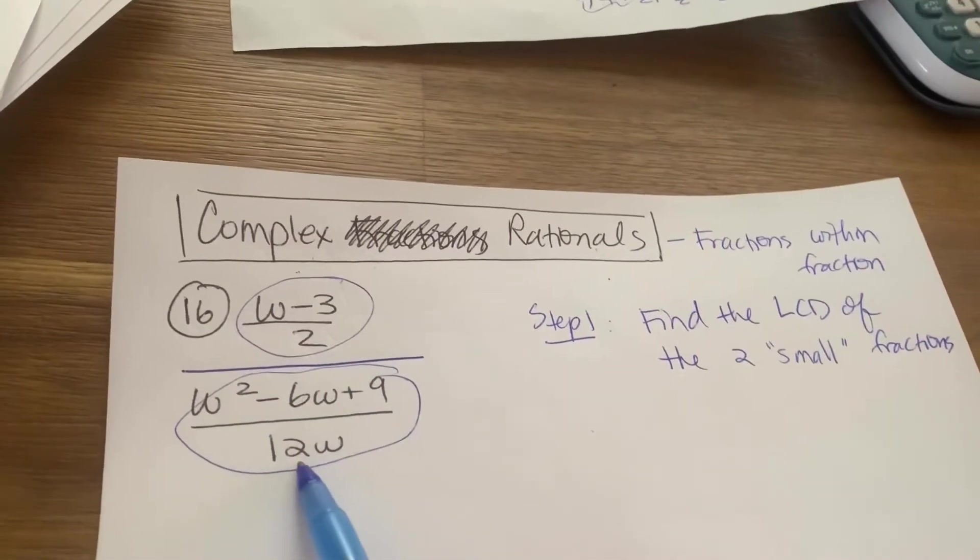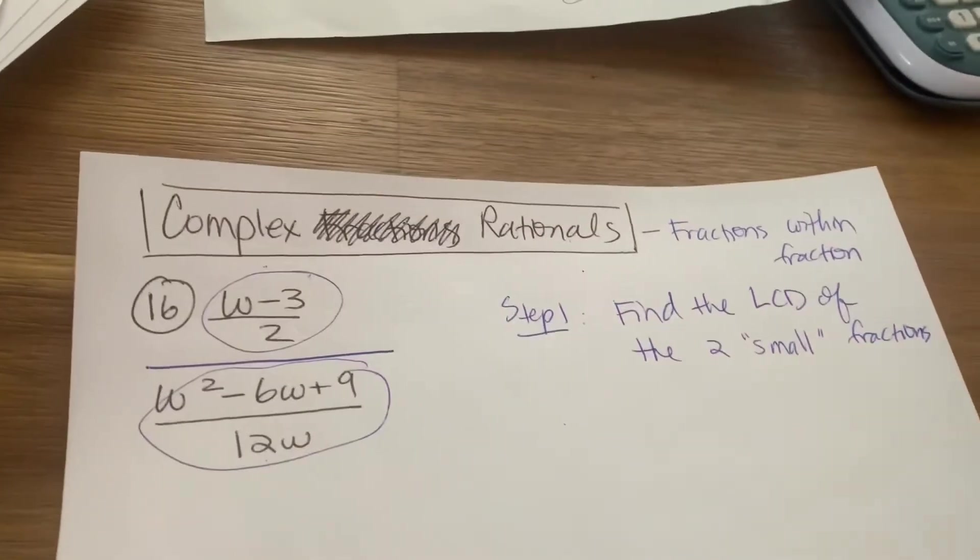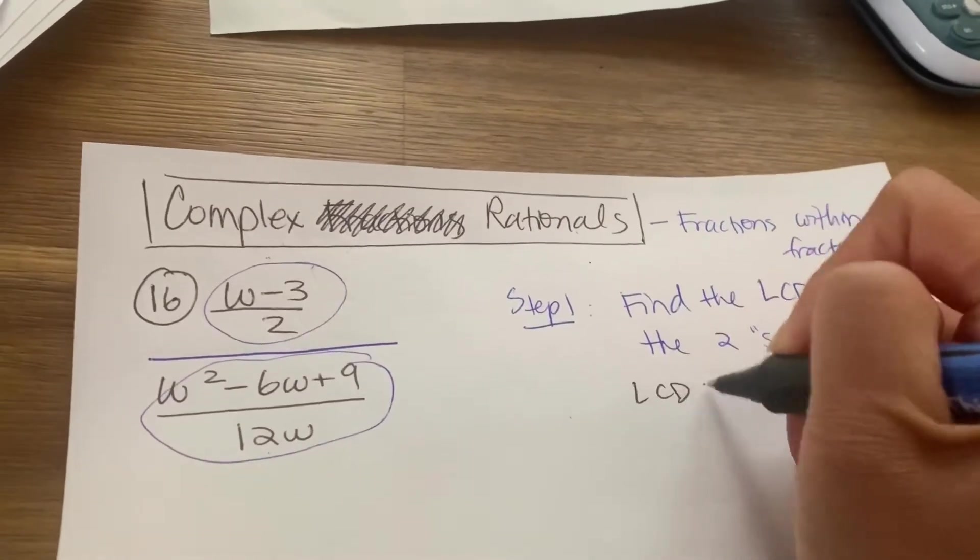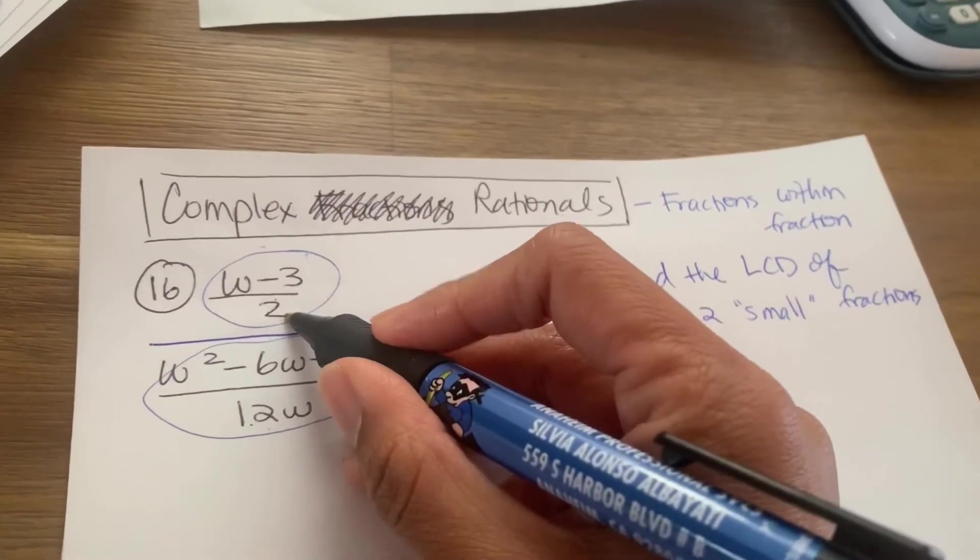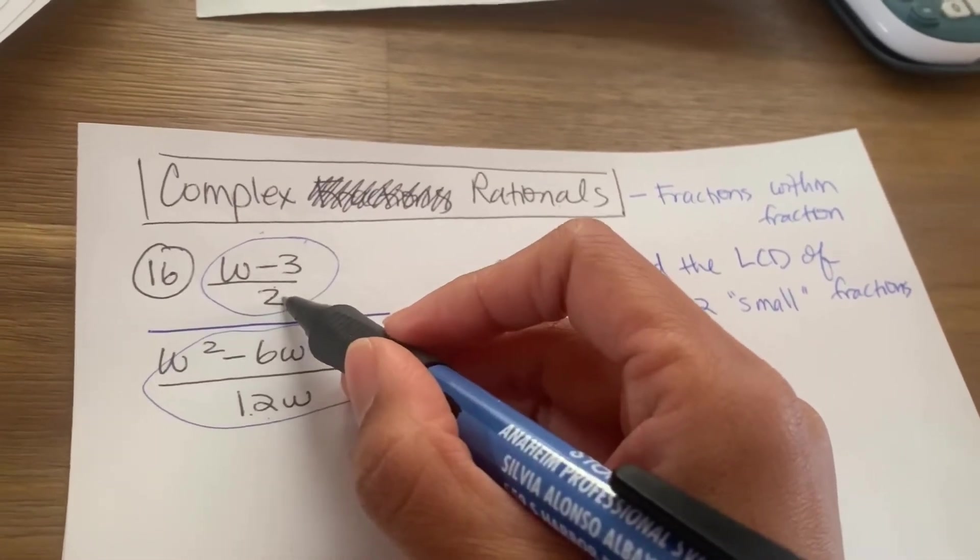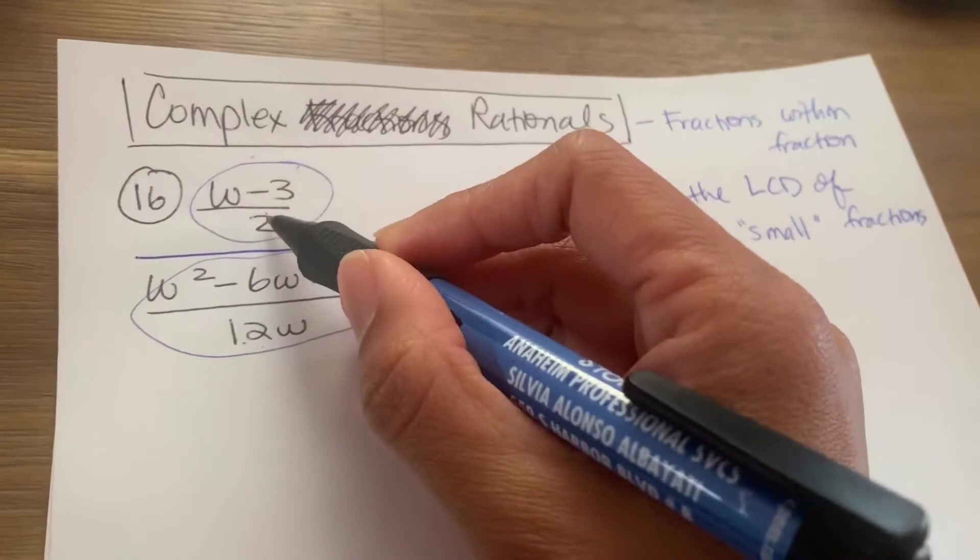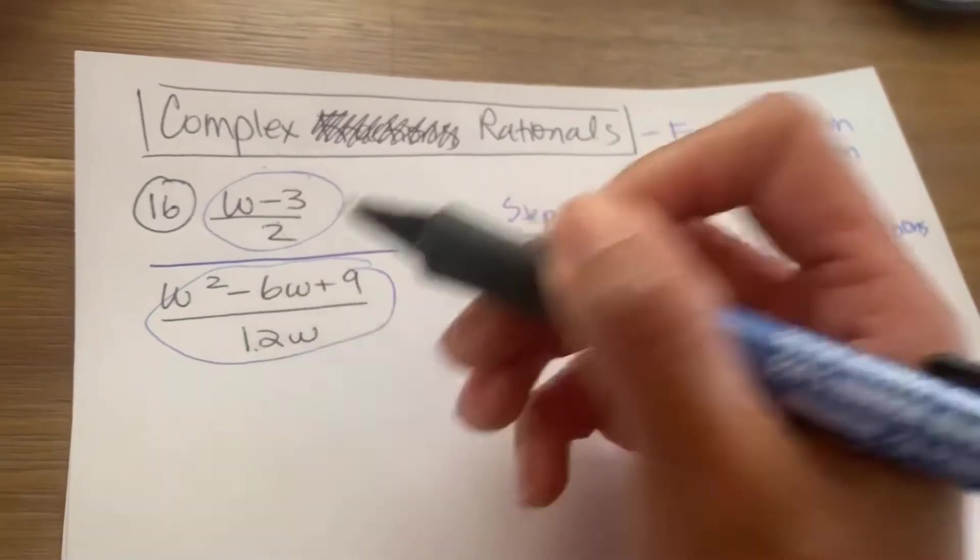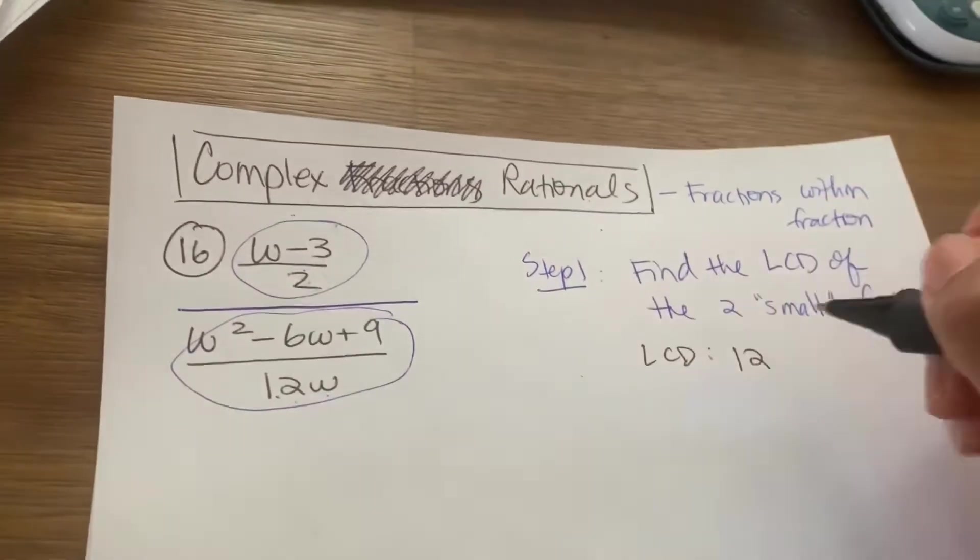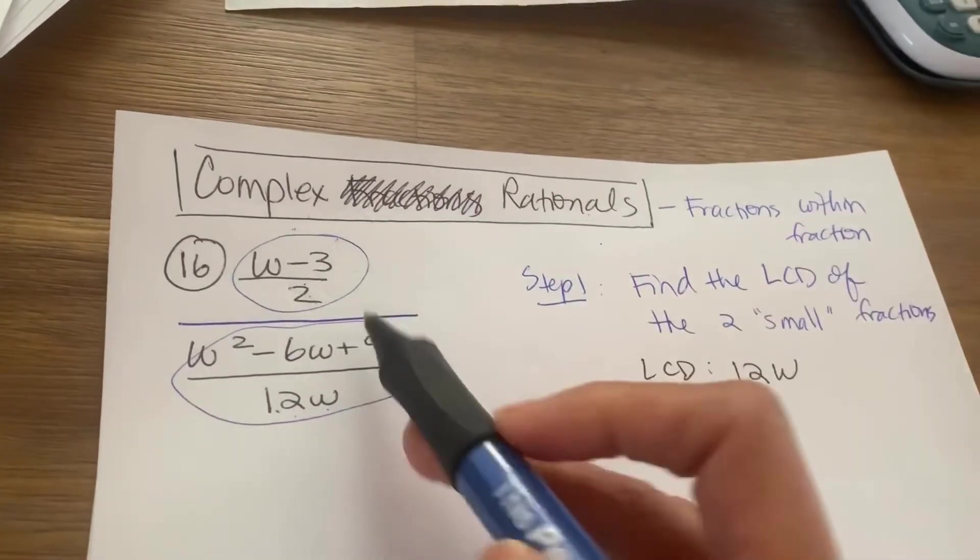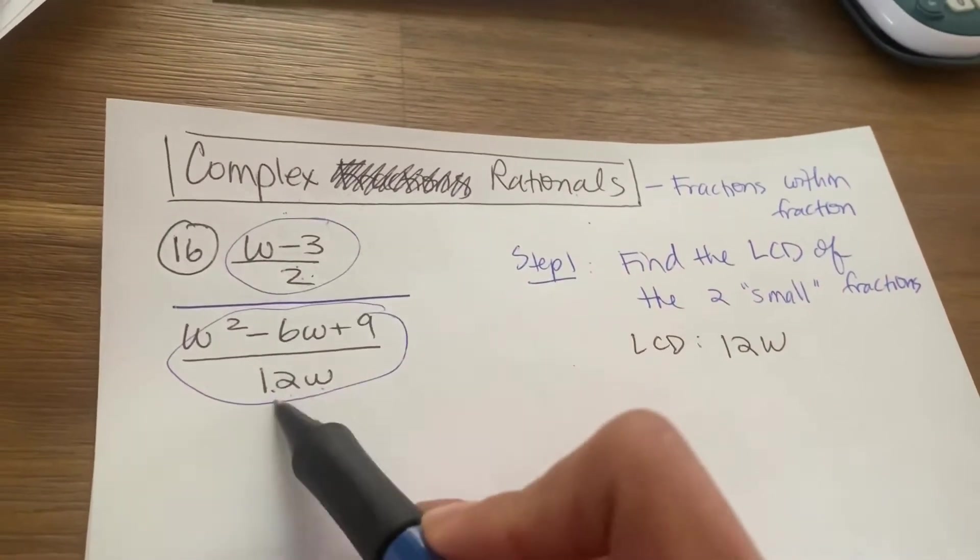So here I have 2, and here I have 12W. So in this problem, the LCD, 2 and 12W, the lowest common denominator is the lowest common multiple. What multiple does 2 and 12 have in common? 12. So 12 and then multiple W. So the lowest common denominator is 12W.